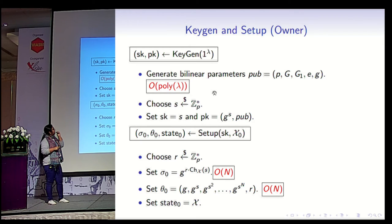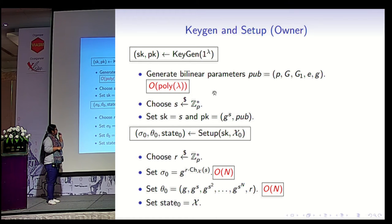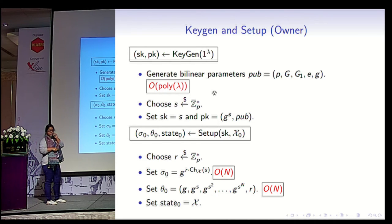The keygen and setup are run by the owner. In the keygen phase, the owner takes a security parameter as input, generates the public parameters for the bilinear map, and also chooses a secret s from Zp*, which is its secret key. The public key is g^s and pub. To set up the accumulation, it takes the set x0 as input, chooses the blinding factor r for the set, and the actual accumulation sigma zero is g^(r · ch(s)). The authentication information outsourced to the server is the string g^s up to g^(s^n), along with the randomness. For updates, the owner maintains internal state remembering the entire set.